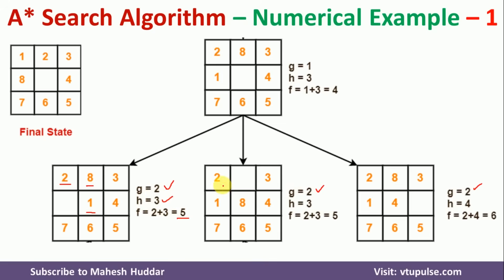For the second move (8 top to bottom): 2, 1, and 8 are misplaced — h = 3, so f = 2 + 3 = 5. For the third move (4 right to left): 2, 8, 1, and 4 are misplaced — h = 4, so f = 2 + 4 = 6. The first two positions both give f = 5, so we consider both and continue exploring tile movements from each.